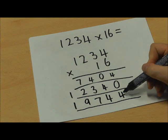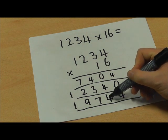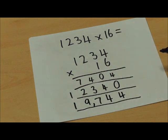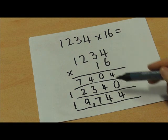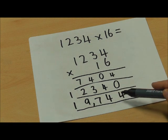So I'm going to count 3 from the unit, 1, 2, 3, and put my comma in there. So 1,234 times 16 is 19,744.